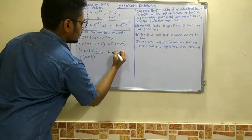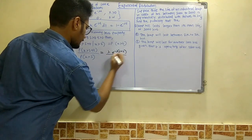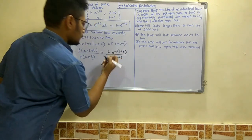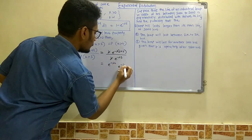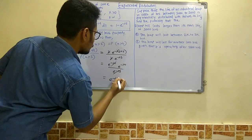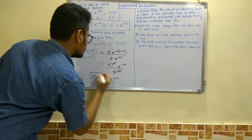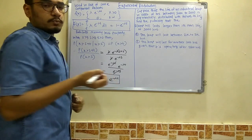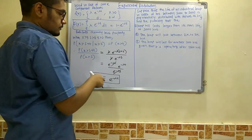Substituting the formula: we put λ·e^(−λ(s+t)) in the numerator and λ·e^(−λs) in the denominator. This simplifies to e^(−λs)·e^(−λt) divided by e^(−λs), so e^(−λs) cancels, giving P(X > t). When this memoryless case applies, we use only e^(−λt) and not the CDF formula 1 minus e^(−λt).